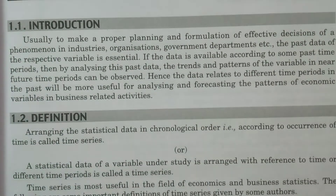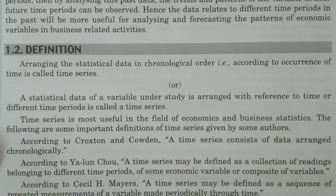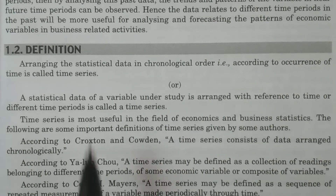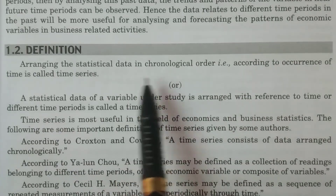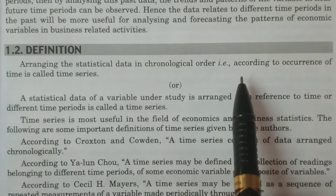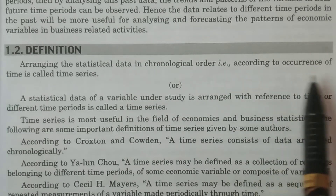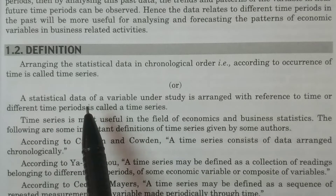Now, the definition of time series: arranging the statistical data in chronological order, that is in accordance with time — in accordance with the occurrence of time — is called time series.